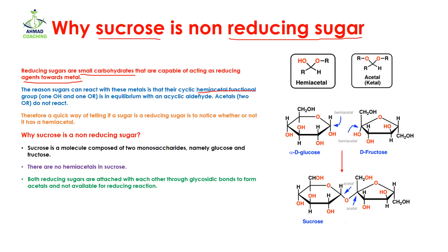Now, what is a hemiacetal functional group? Hemiacetal means that on one carbon, one –OH group and one –OR group is attached. If this type of arrangement is present in a sugar, it's going to be a reducing sugar.